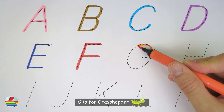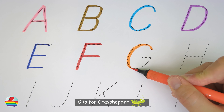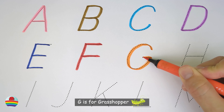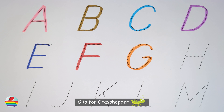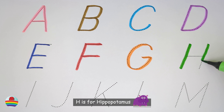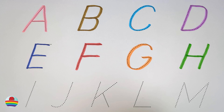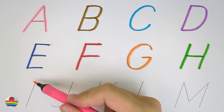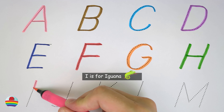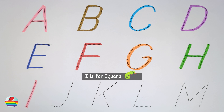G. G is for grasshopper. G. H. H is for hippopotamus. H. I. I is for iguana. I.